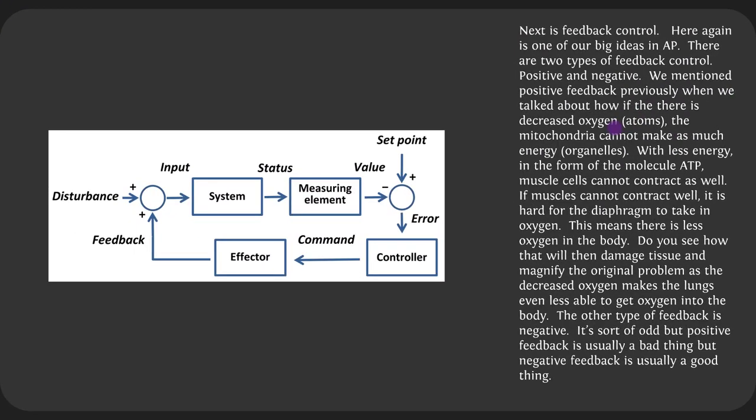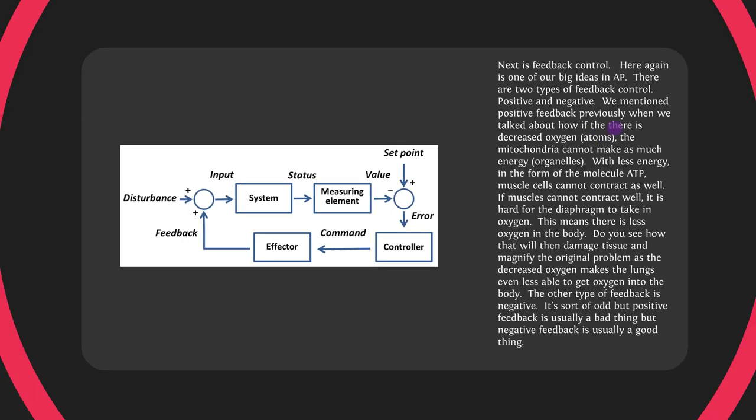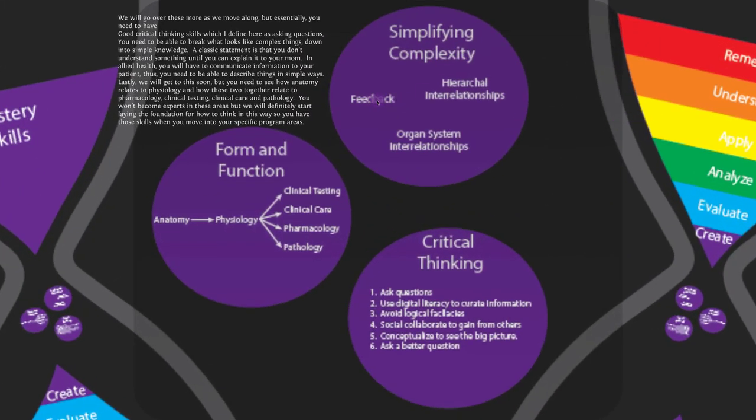Next is feedback control — another of our big ideas and mastery-level concepts in A&P. There are two types: positive and negative. We mentioned positive feedback earlier: a decrease in oxygen means mitochondria can't make energy (ATP), muscle cells can't contract as well, the diaphragm can't take in oxygen, so there's even less oxygen — a cycle that gets worse and worse, magnifying the original problem. That's positive feedback.